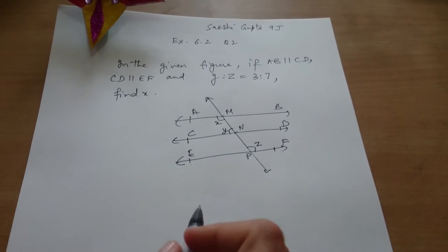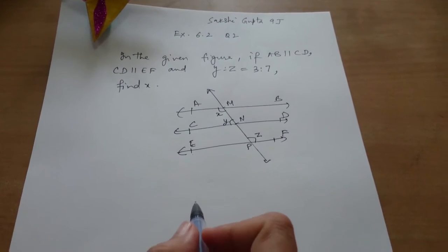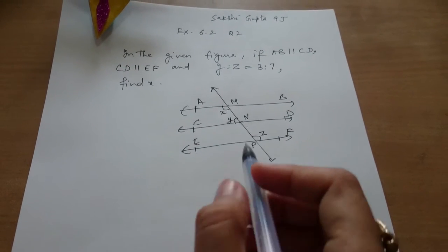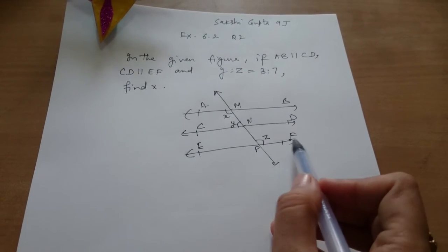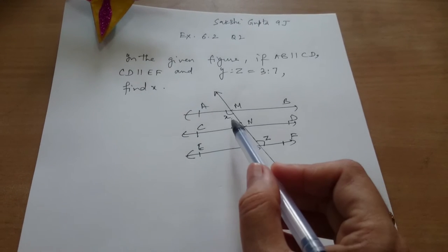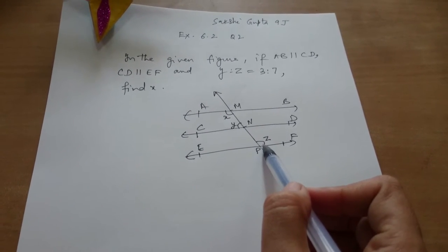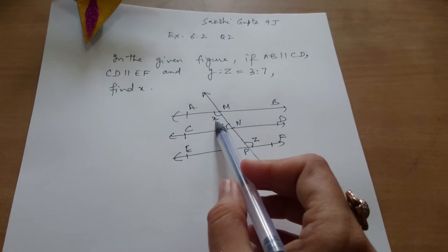Sakshi, the question for you is: in the given figure, if AB is parallel to CD and CD is parallel to EF, it is also given that Y to Z is 3 to 7, you have to find the value of X.